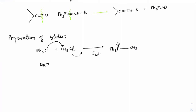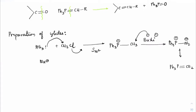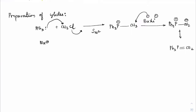Now we use a strong base like BuLi (Bu⁻ Li⁺). Because Ph₃P is a strong withdrawing group, it increases the acidic strength of the adjacent proton, so Bu⁻ extracts the proton to create Ph₃P⁺ and CH₂⁻. This exists in ylide form: Ph₃P=CH₂. That is how the ylide is prepared.